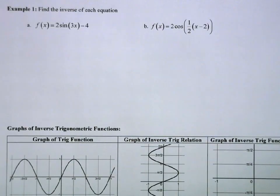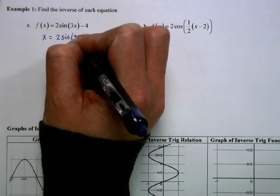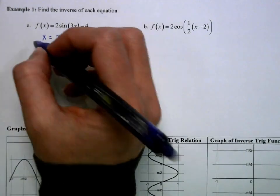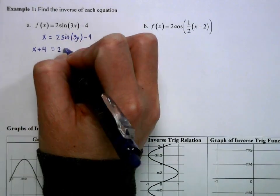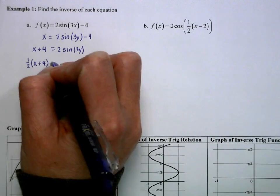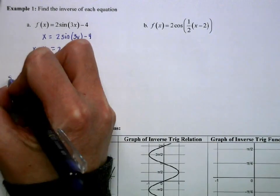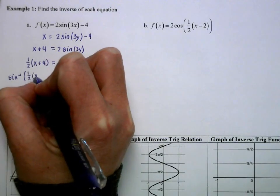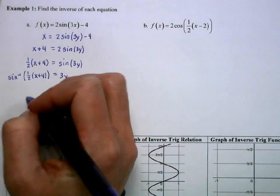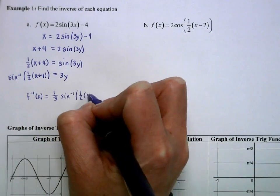We're going to be finding some inverses. It's important to note that there are domain and range restrictions I'm not going to deal with right now — we'll deal with that shortly. I can switch x and y and solve for our y value. I'm going to add 4, then divide by 2 — I'll multiply by 1 half. Now if the sine of 3y is all of this, then the sine inverse or arcsine of this is going to be 3y. So I'll divide by 3 and express my answer as 1 third times sine inverse of (1 half x plus 4).